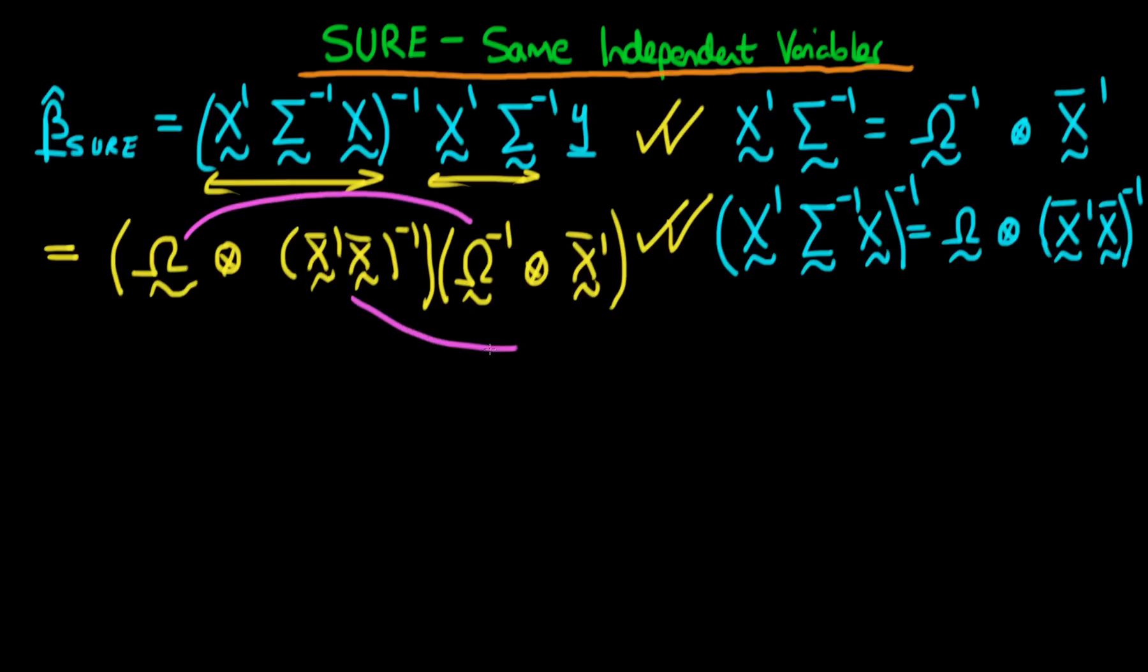Then if we use our rule for when we multiply two Kronecker delta products, this is equivalent to the first two terms multiplied together times the Kronecker delta product of that with the last two terms multiplied together. If we evaluate this now, the first term is just omega times the inverse of omega which is just the identity matrix, and because omega and the inverse of omega are both n by n, that's going to be an identity matrix which is n by n in dimension. It's going to be the Kronecker delta product of the identity matrix with these last two terms multiplied together, which is just x bar primed times x bar inverted times x bar primed.